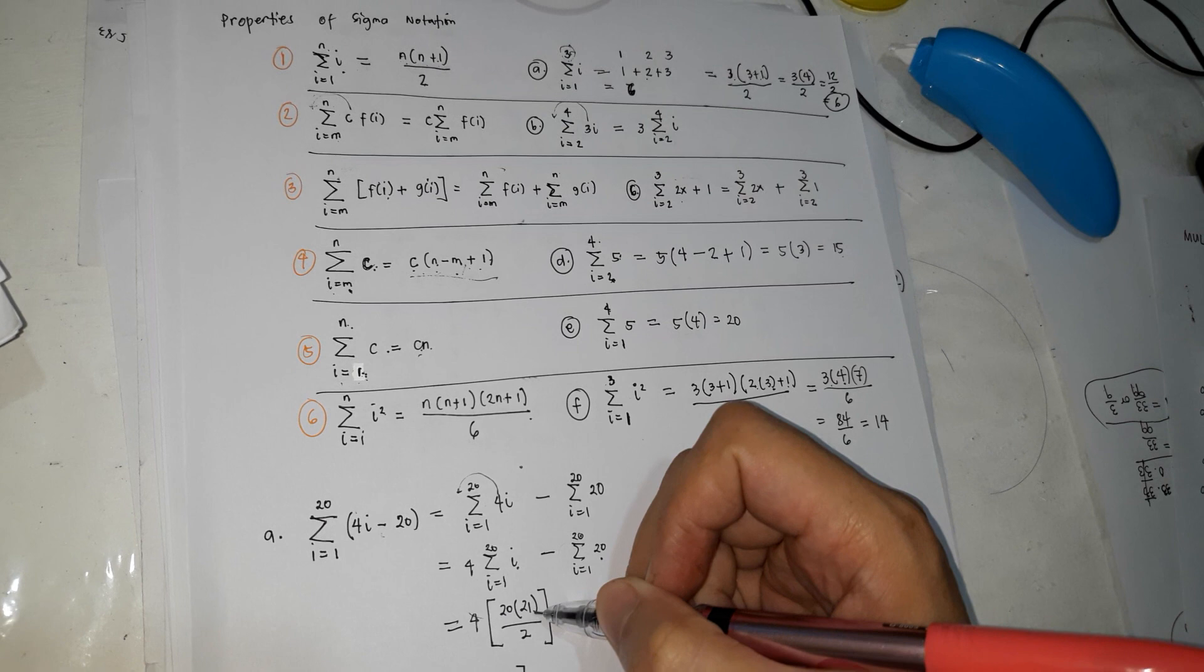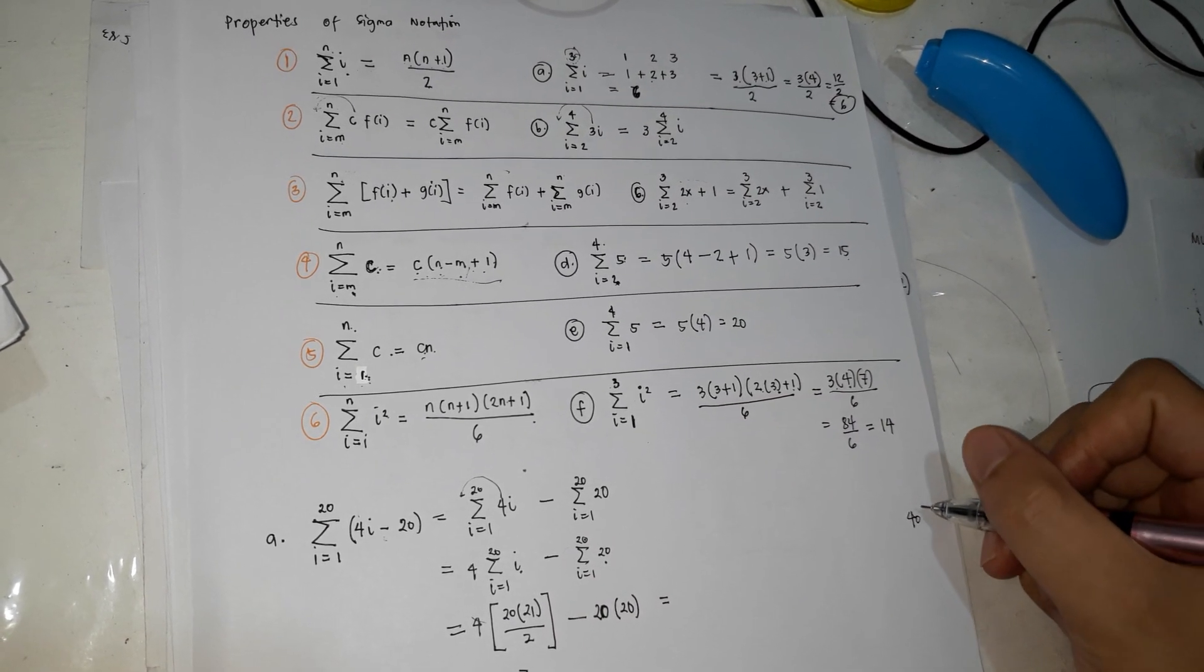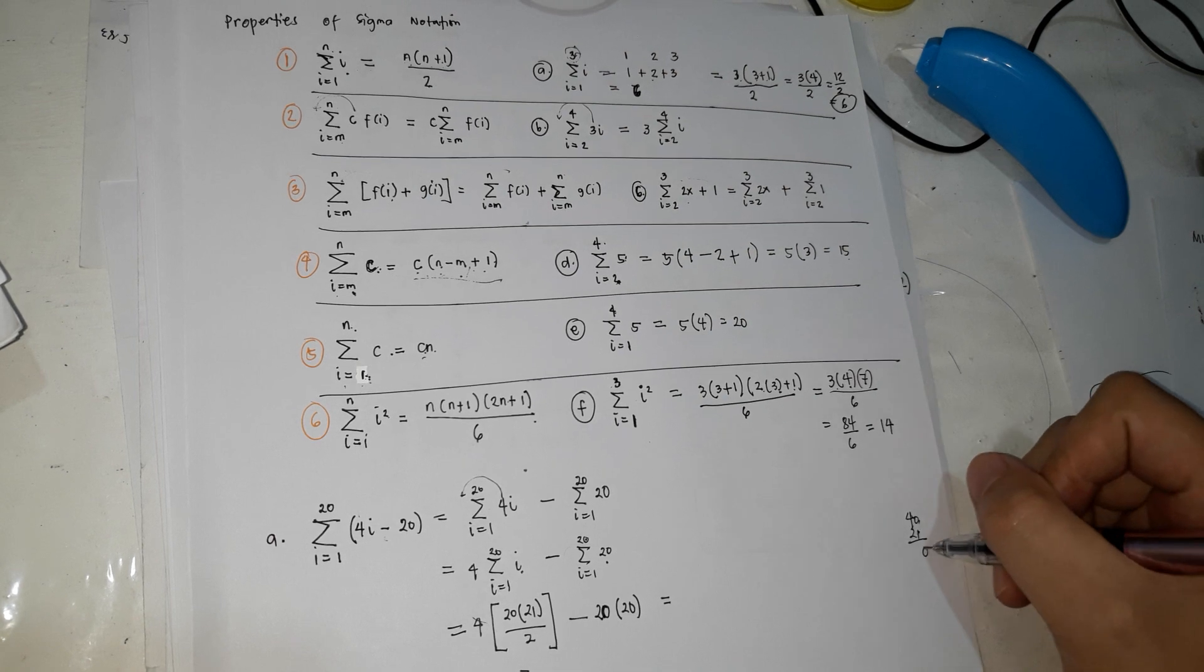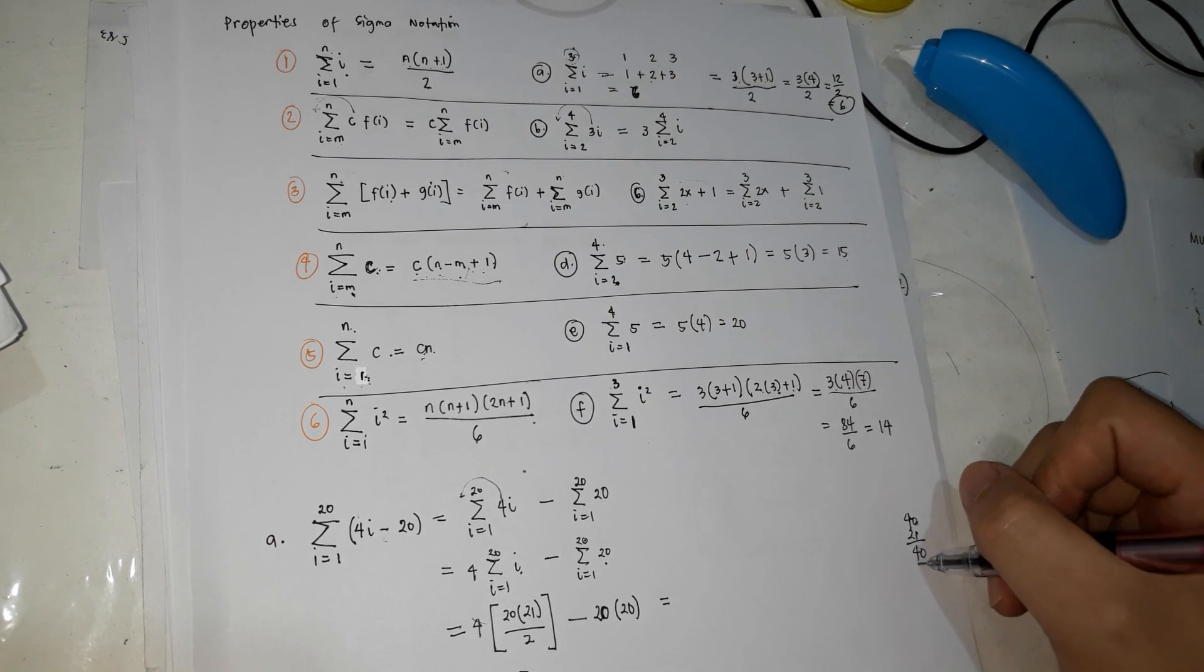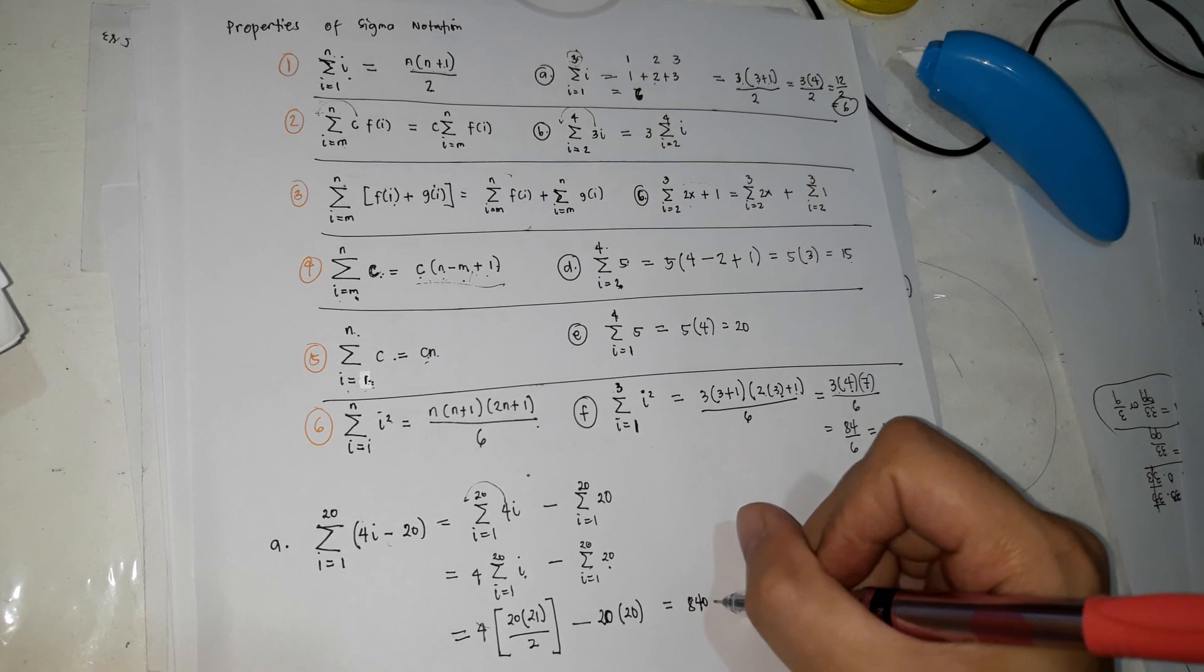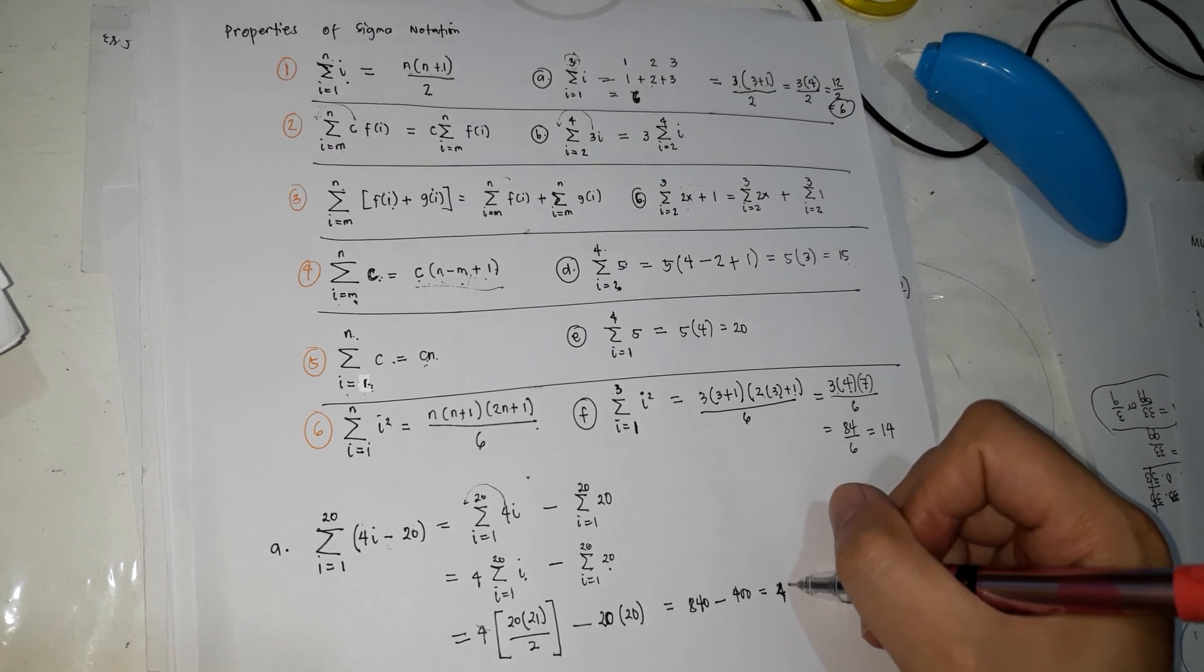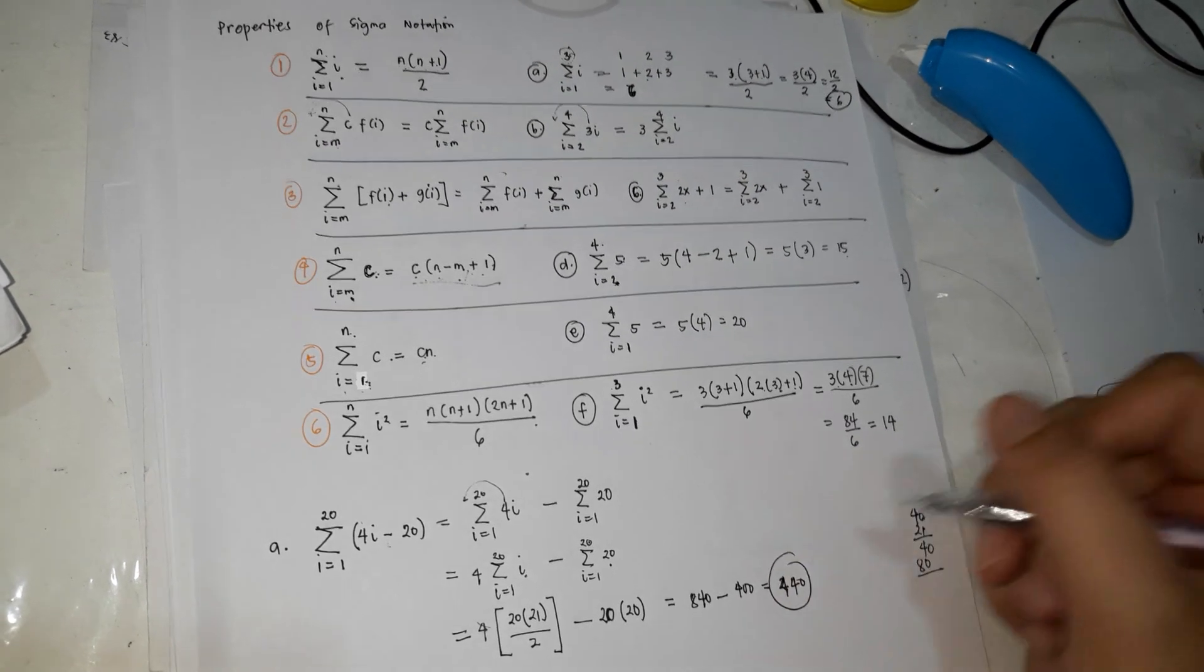40 times 21, 40 times 21, 840. So 840 minus 400. So the answer is 440. So this is the answer.